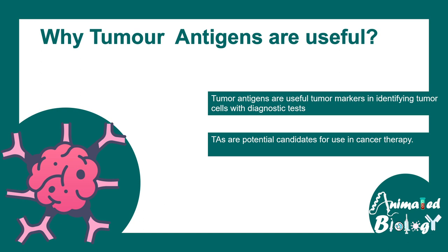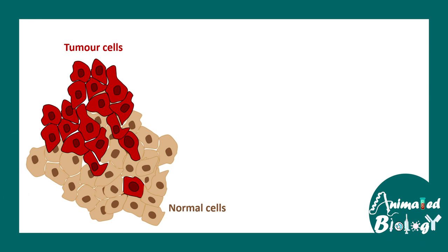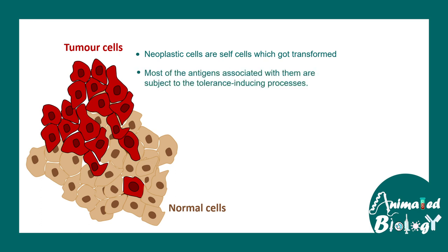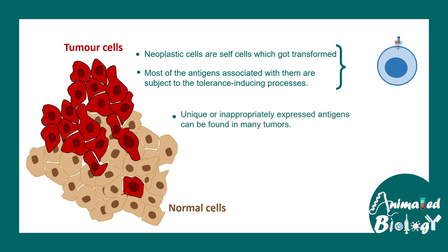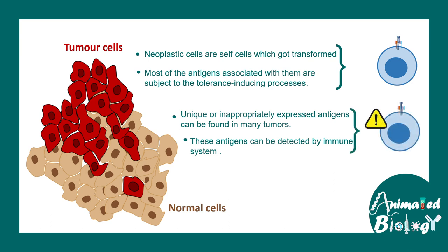This is a tumor cell which has grown in the vicinity of normal cells. Neoplastic cells are self-cells — they are just transformed into a carcinogenic state, and most of the antigens present on the surface of tumor cells are actually self-antigens. So T cells should not identify them as foreign, and no immune response should be evoked. However, in cancer cells there are a specific set of antigens which are new or unique, and these antigens might not be present in normal cells. Hence they can be detected by the immune system as foreign, and a potential immune response can be generated against them.